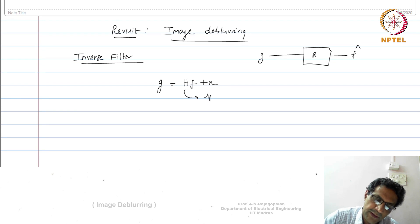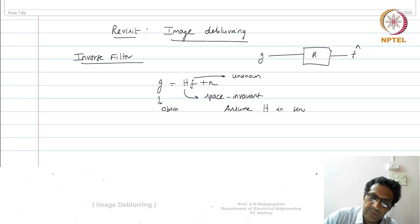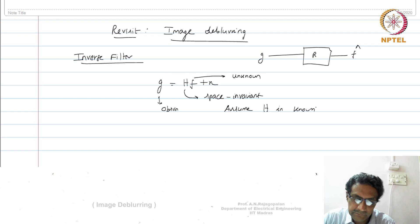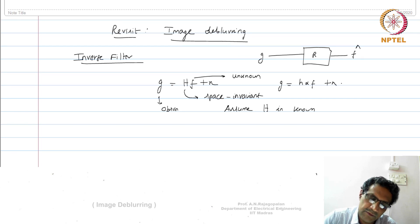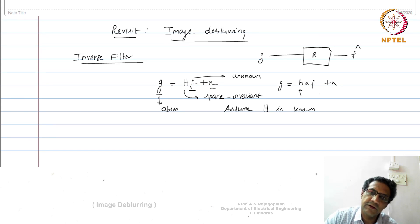Assume for instance that this is space-invariant blur. This is the blurring model — H is the blur, F is the clean image (unknown), and G is the observation. Assume that H is known; that means somebody tells you the impulse response or the point spread function. In convolution form, we know this is h convolved with f plus n, and when you write it in matrix-vector form, this becomes HF plus N, where H is a matrix with entries of the impulse response, N is your noise vector.